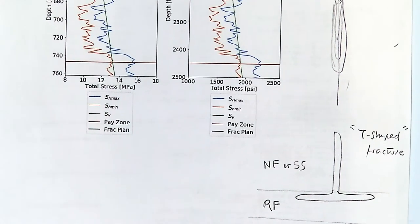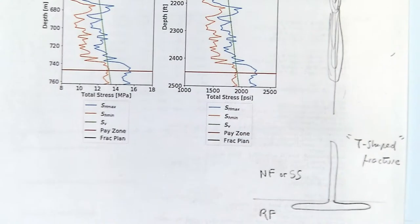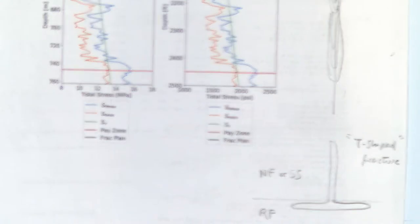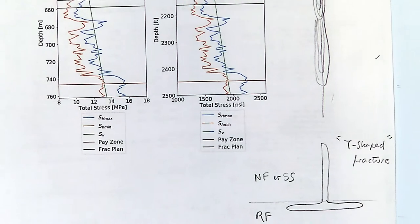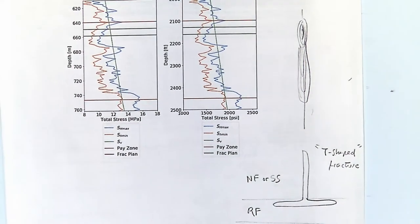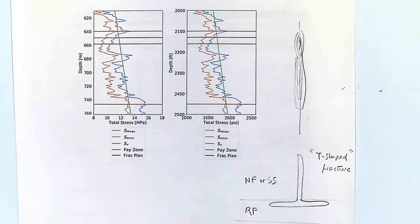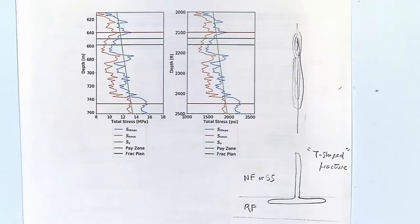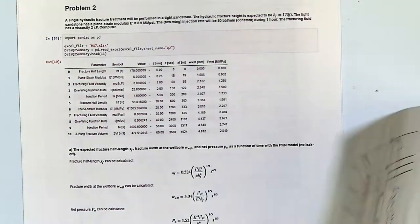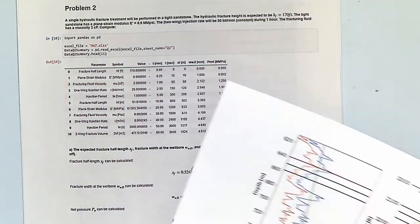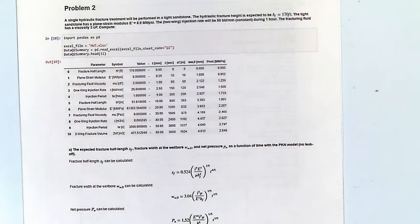The T-shaped fracture happens because there is a change in the faulting regime at that location. That's the end of problem number one. Did you guys have any problems solving this?